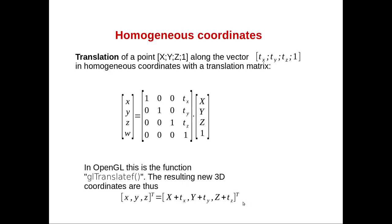This is implemented in OpenGL with the function glTranslatef — where f stands for float arguments, meaning the coordinates are floating-point numbers.